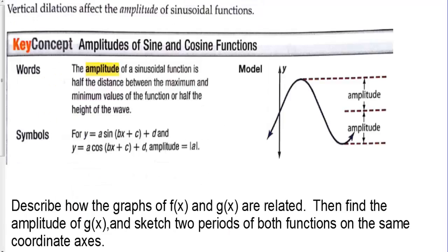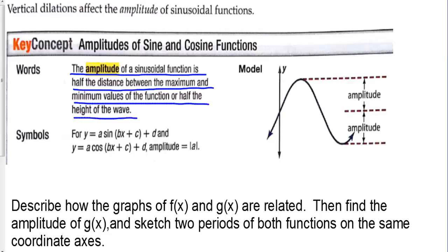Vertical dilations affect the amplitude of sinusoidal functions. The amplitude of a sinusoidal function is half the distance between the maximum and minimum values of the function, or half the height of the wave. So if this is the midline, the amplitude is from the midline to the top, or from the midline to the bottom.